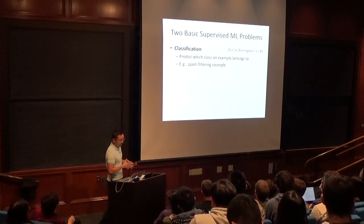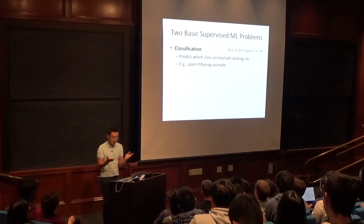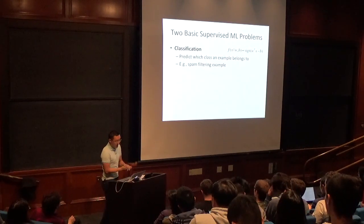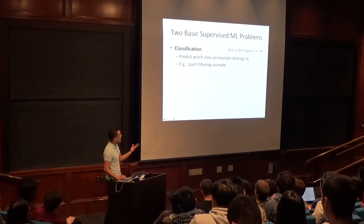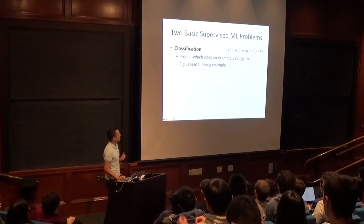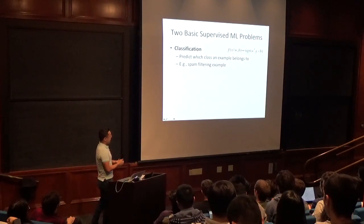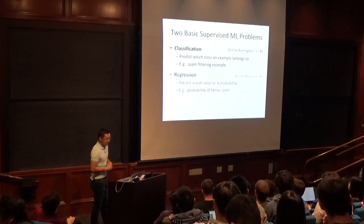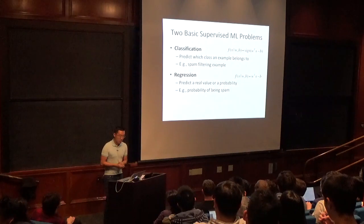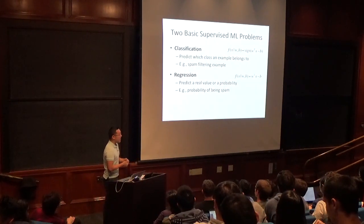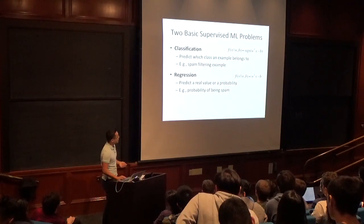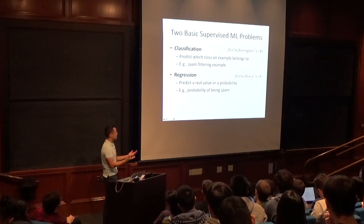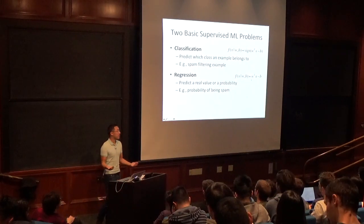There are two basic supervised learning paradigms. The first is classification — in the simplest case, binary classification. For a linear model, you do a weighted sum of the feature vector attributes and check if it's above or below a threshold; above predicts positive class, below predicts negative. The second is regression, where the goal is to predict a real value rather than a category. For regression, you simply remove the sign function and return the raw score of the linear model.